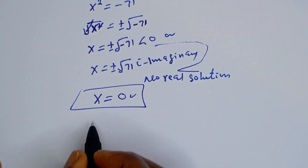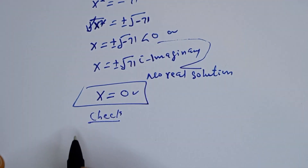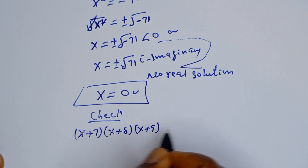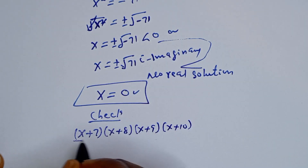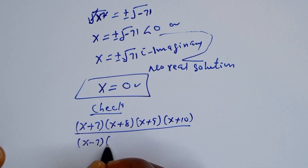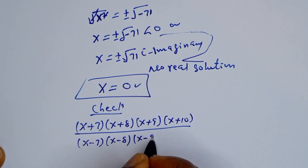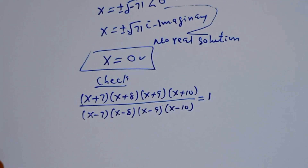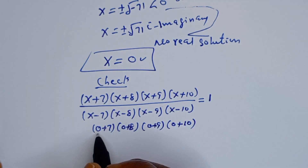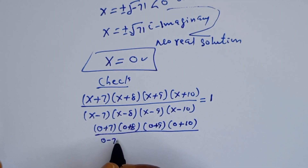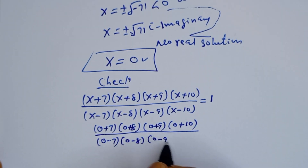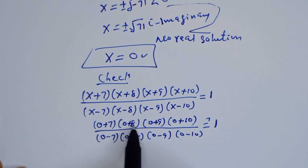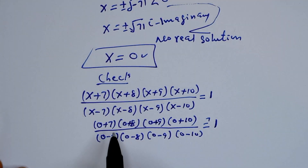Now we can check to confirm if our answer is right or wrong. To check, we substitute S equals 0 into the given equation: 0 plus 7, bracket 0 plus 8, bracket 0 plus 9, bracket 0 plus 10, divided by 0 minus 7, bracket 0 minus 8, bracket 0 minus 9, bracket 0 minus 10. Multiplying out: 7 times 8 is 56, times 9 times 10 in the numerator, and the same product with negatives in the denominator.